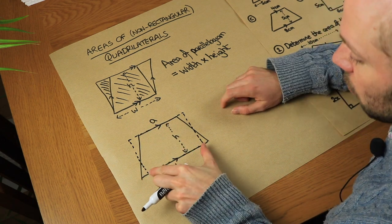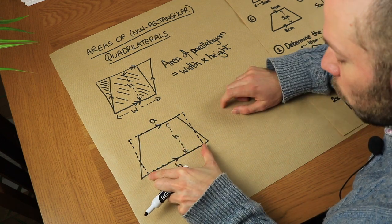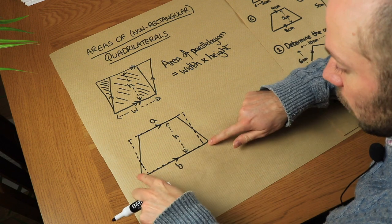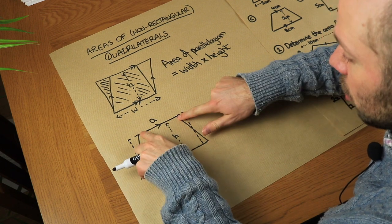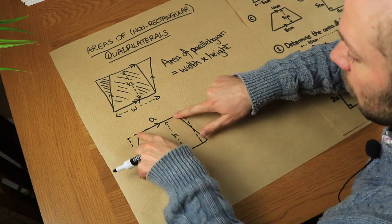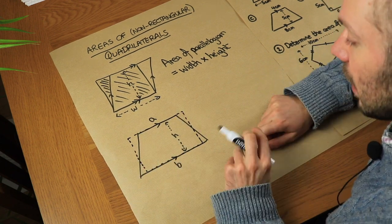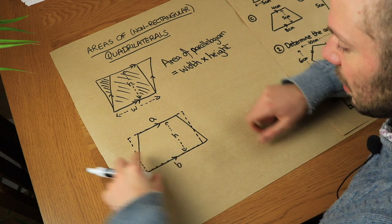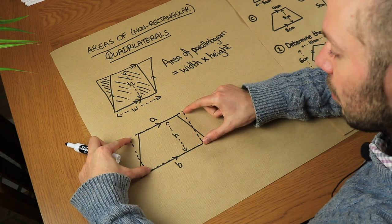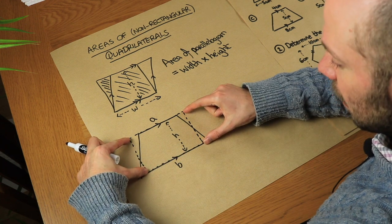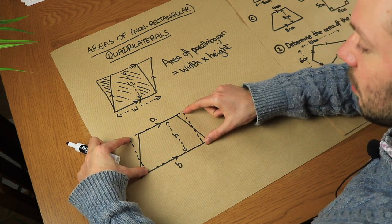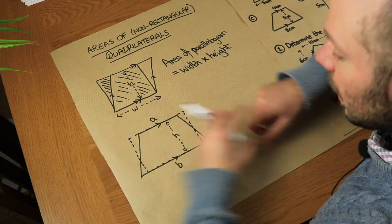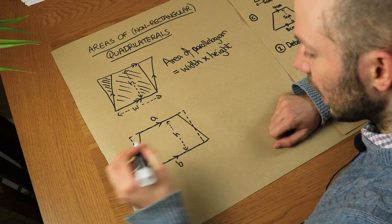We construct a rectangle where the width is the average of the two parallel sides. You can just about see that the area of that rectangle is going to be the same as the area of the trapezium.